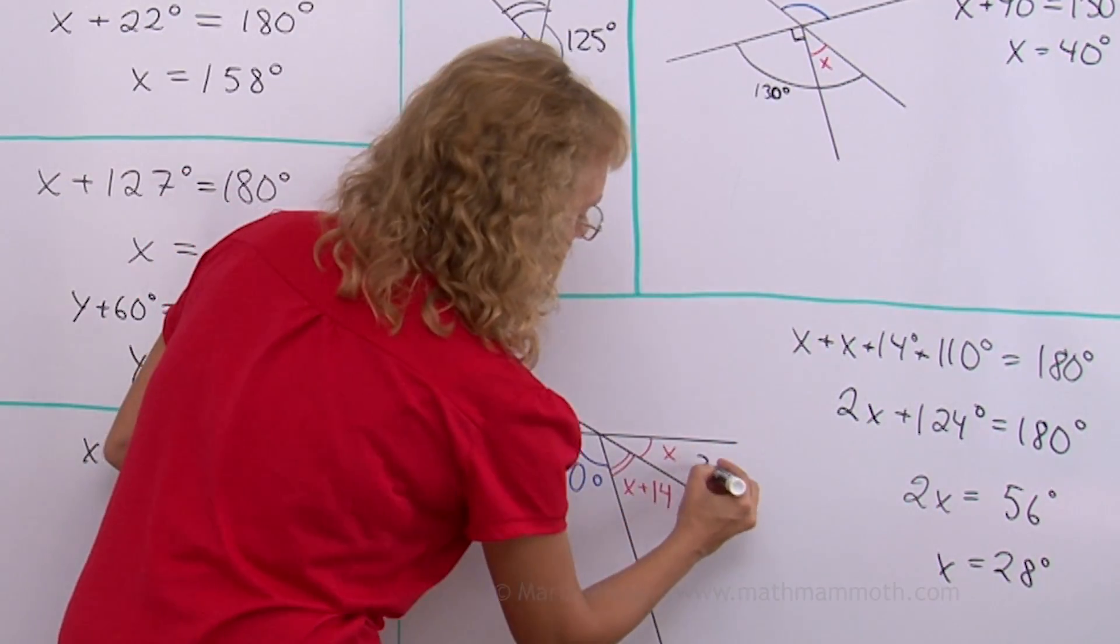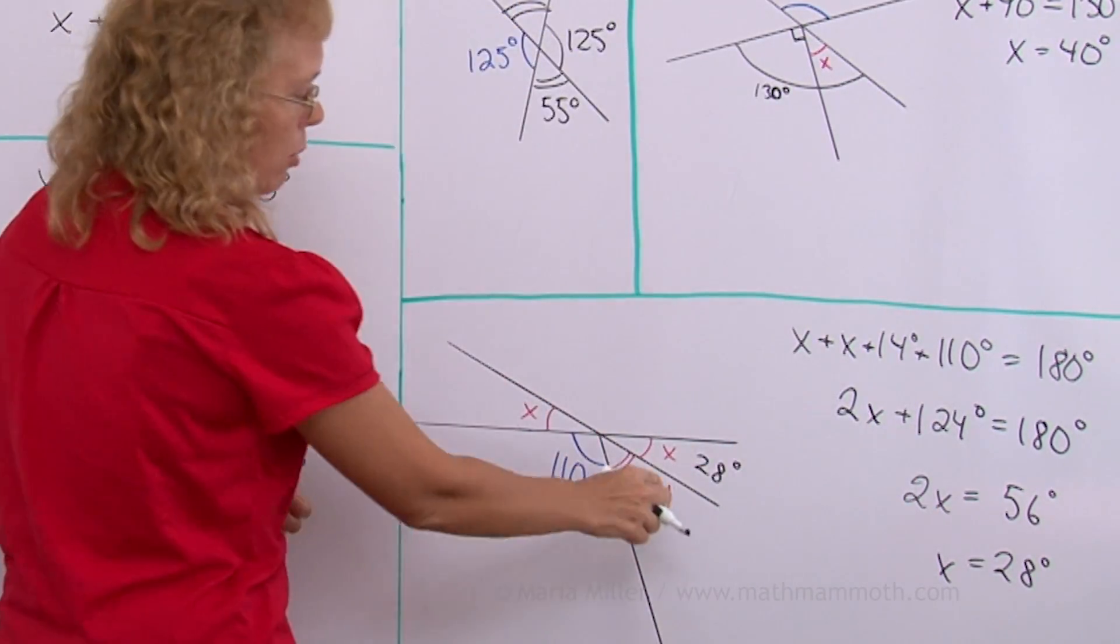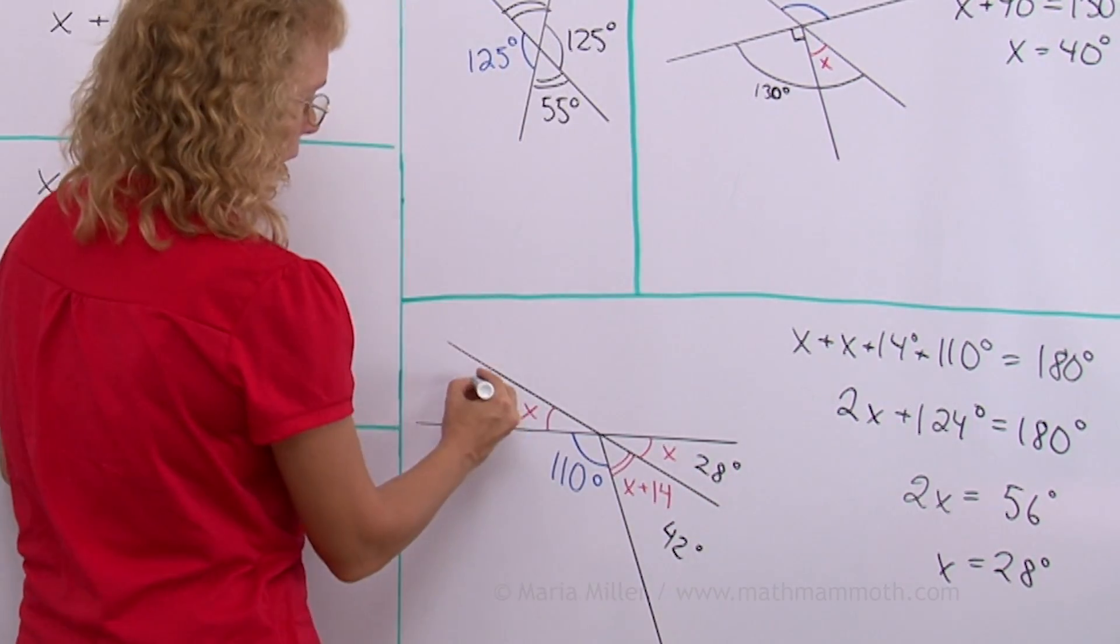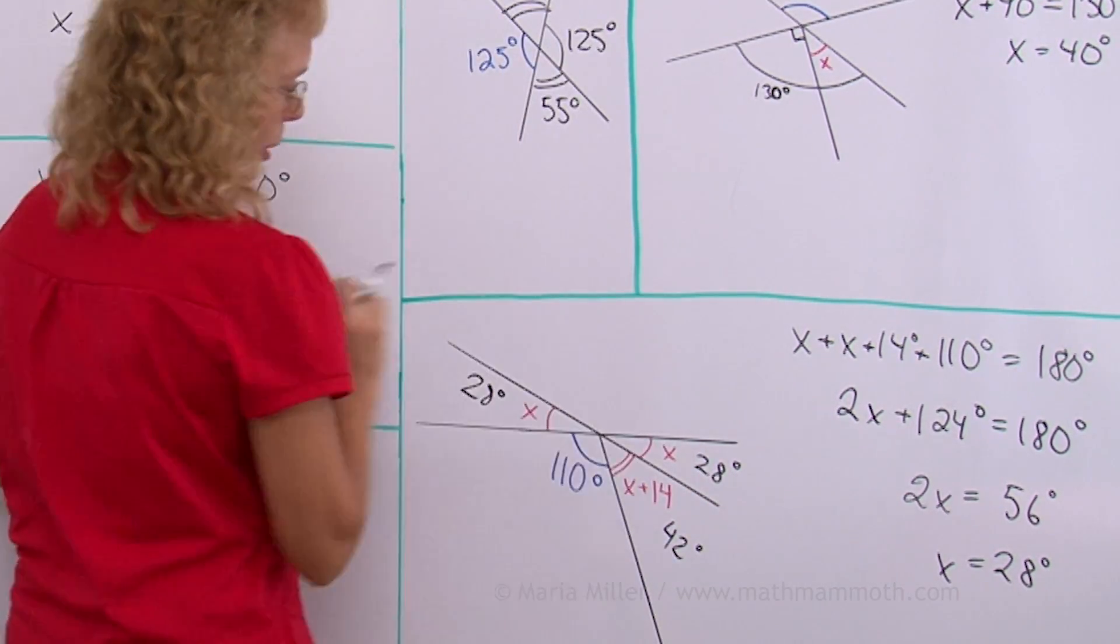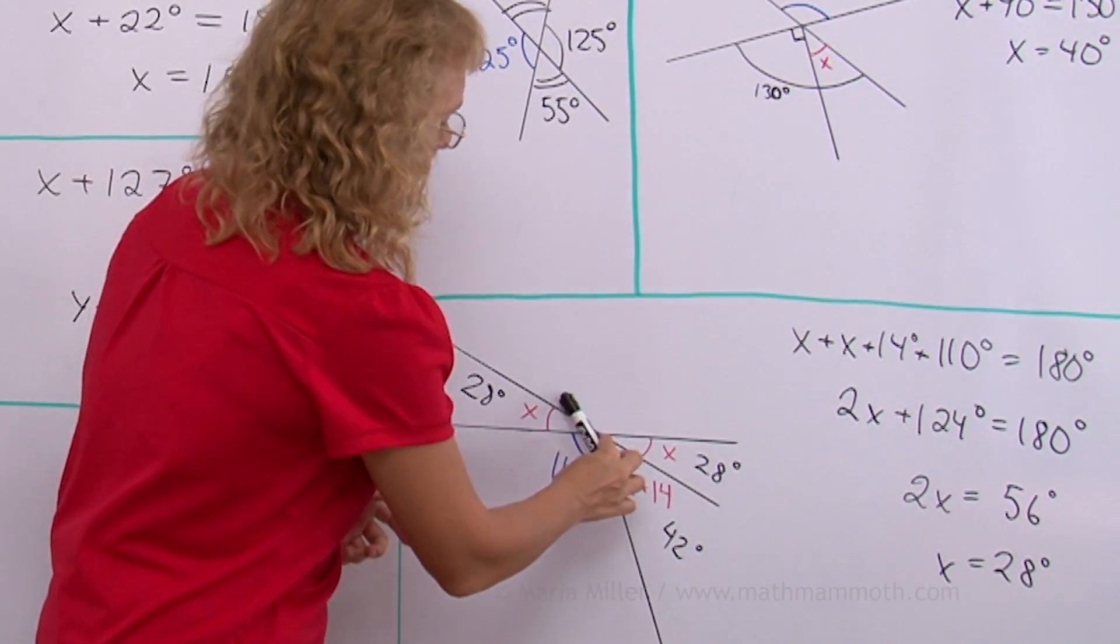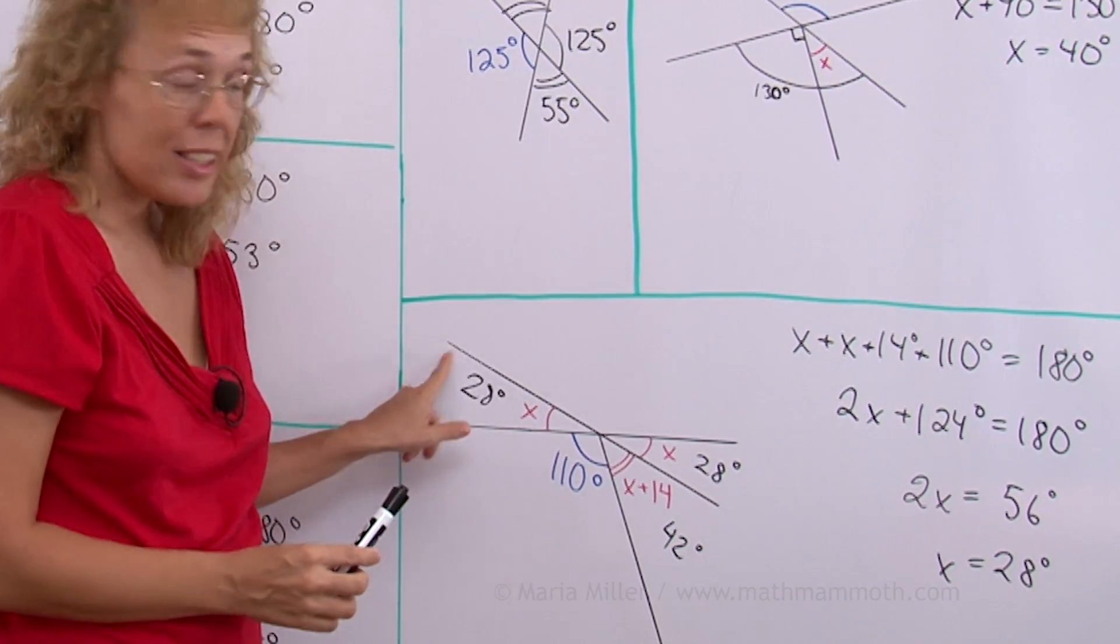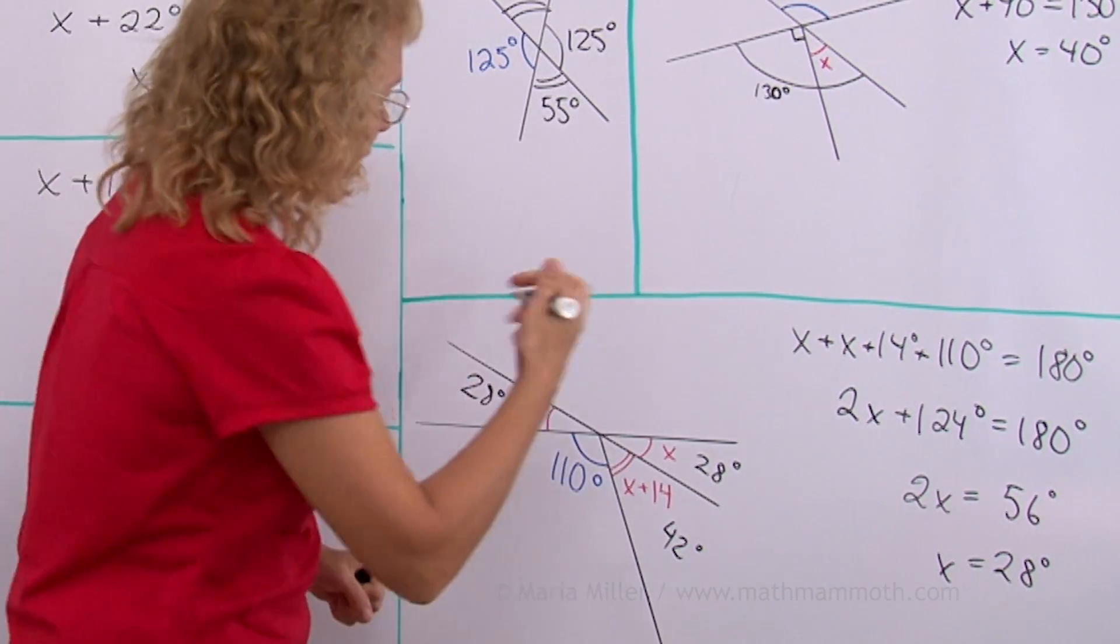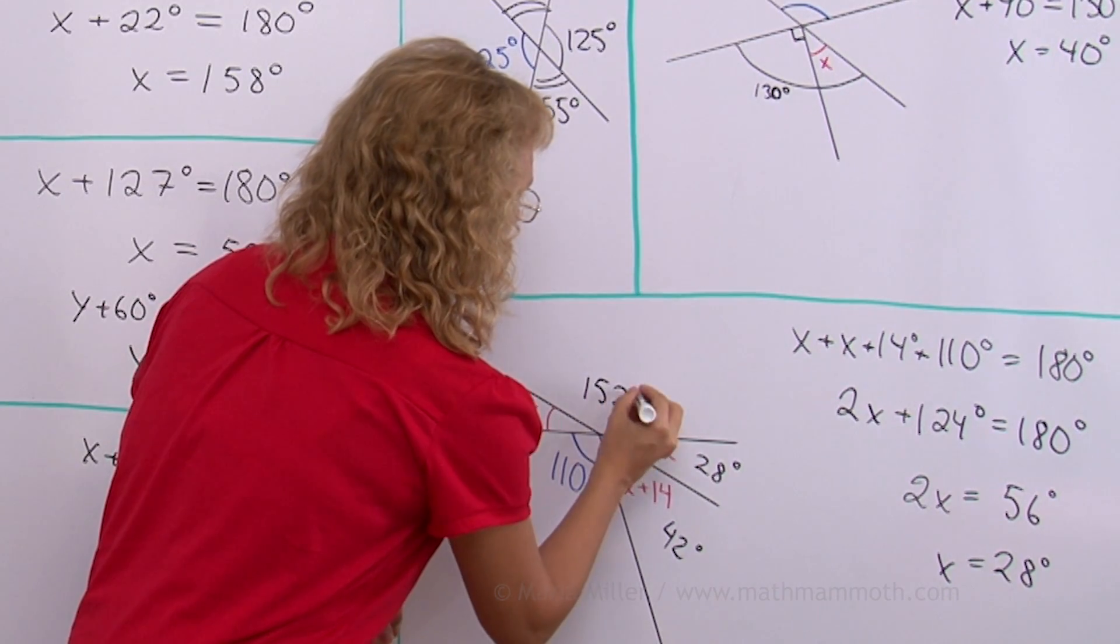So here is 28 degrees. Here is 28 plus 14 which is 42. And here is 28. Now how about this one? The 28 degrees and this unknown angle here together make 180. So this must be 152 degrees.